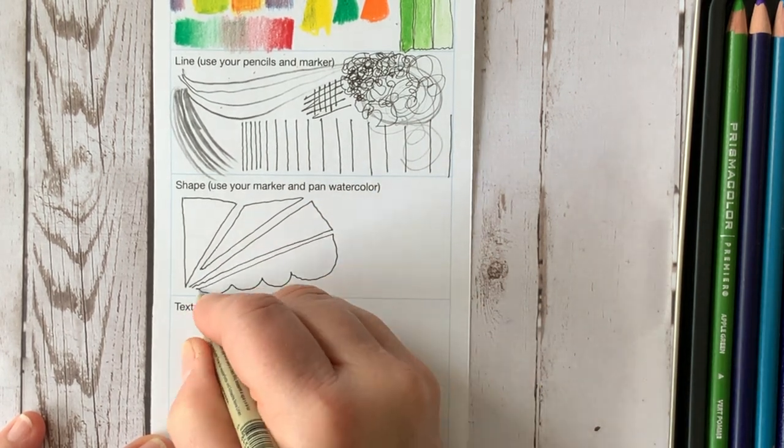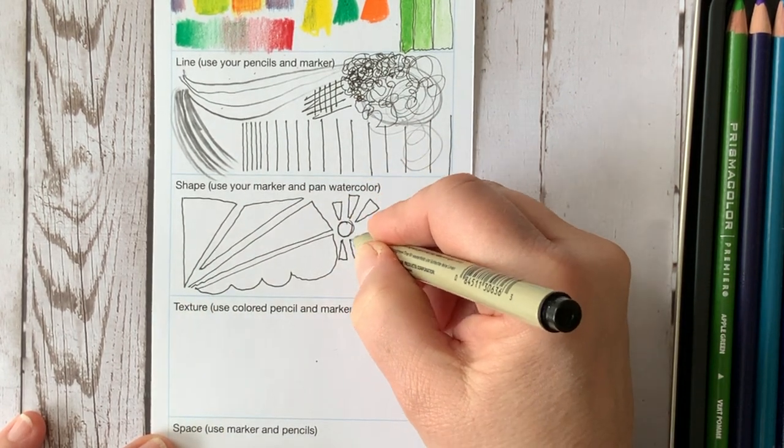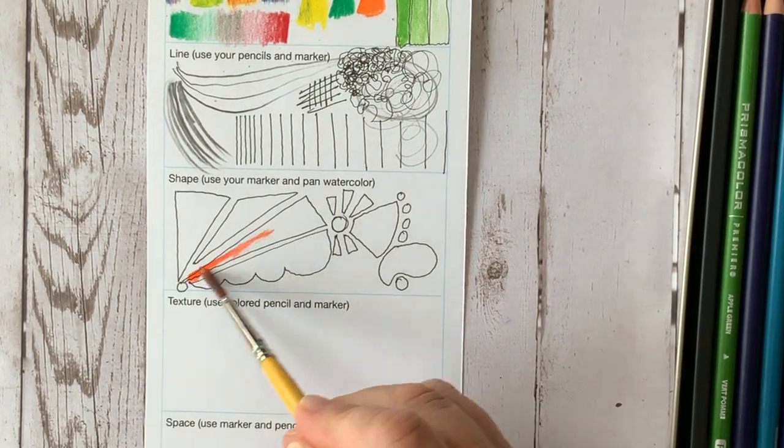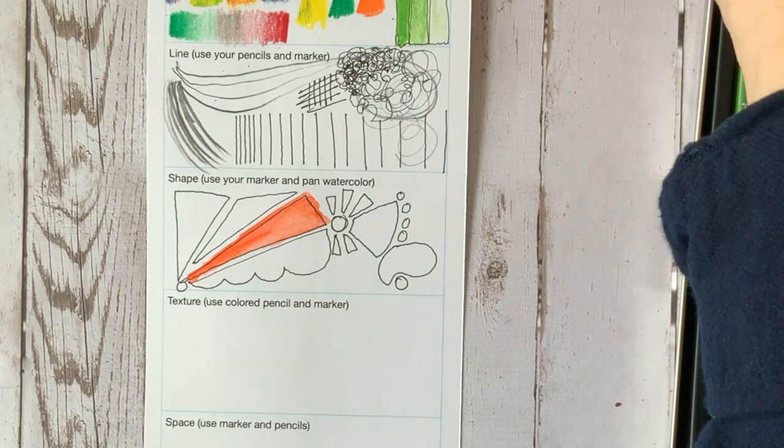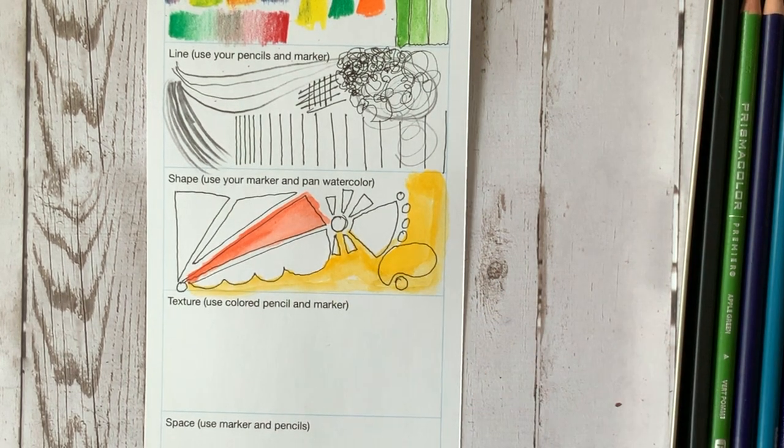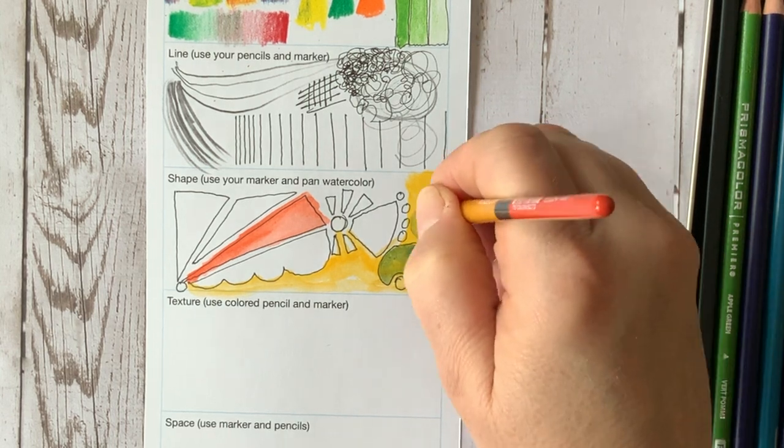The third section is shape. This is a great place where you can learn how to make organic shapes, geometric shapes. You can color them in. You can actually see the importance of shape when you are creating artwork.